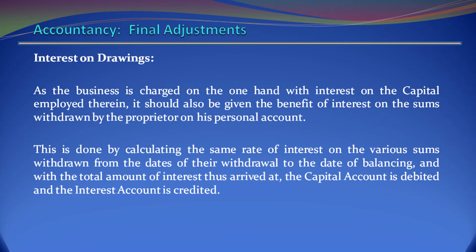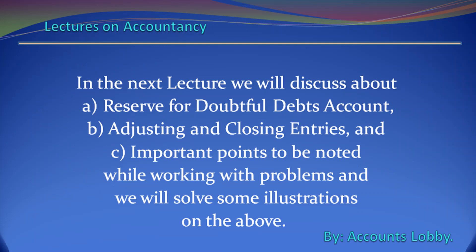Similarly, interest on drawings. As the business is charged on the one hand with interest on the capital employed therein, it should also be given the benefit of interest on the sums withdrawn by the proprietor on his personal account. This is done by calculating the same rate of interest on the various sums withdrawn from the dates of their withdrawal to the date of balancing, and with the total amount of interest thus arrived at, the capital account is debited and the interest account is credited. In the next lecture, we will discuss about reserve for doubtful debts account, adjusting the closing entries, important points to be noted while working with the problems, and we will solve some illustrations on the above.